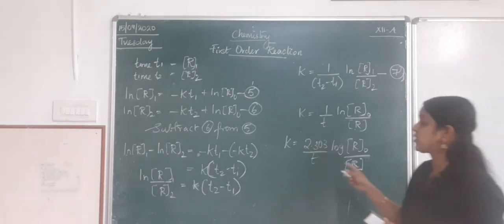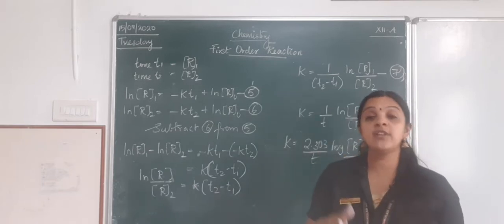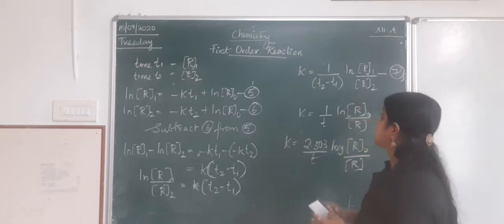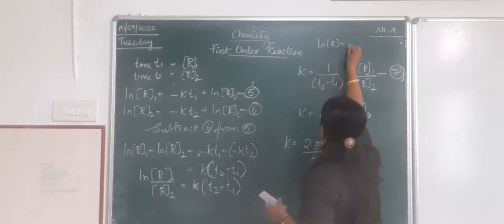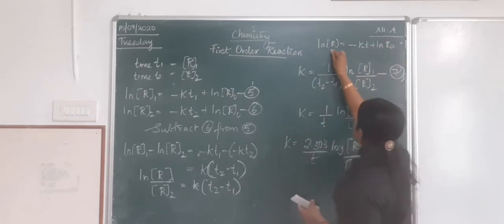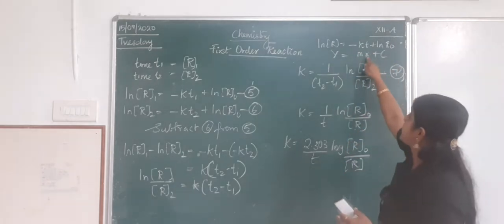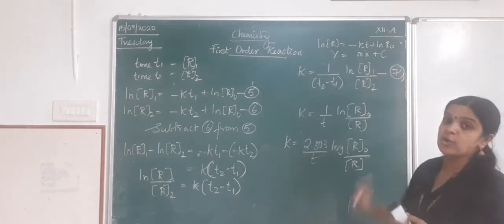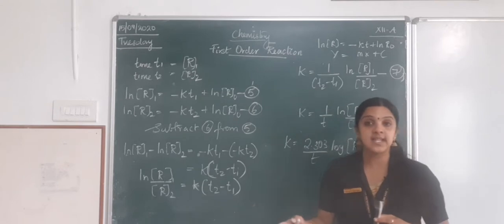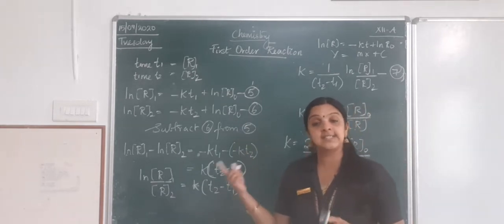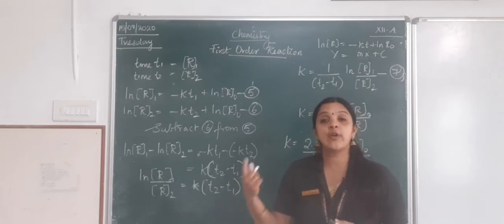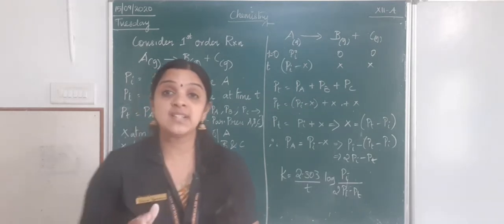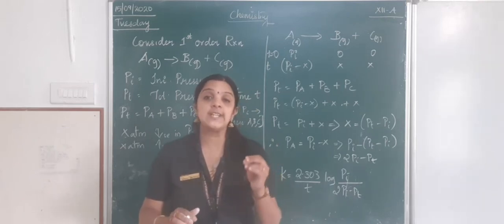This is the equation to calculate k. Just like the zero-order equation y = mx + c, we have ln R = −kt + ln R₀. Drawing a graph with t on the x-axis and ln R on the y-axis gives a slope of −k and an intercept of ln R₀. The graph may be given in the exam or you may be asked to draw it for zero and first-order reactions. Before moving to half-life, let us see an example with first-order reaction for gaseous reactants.